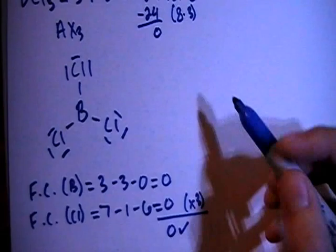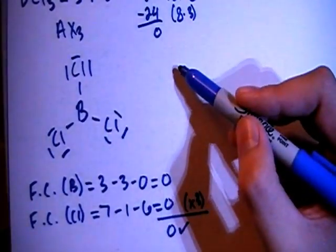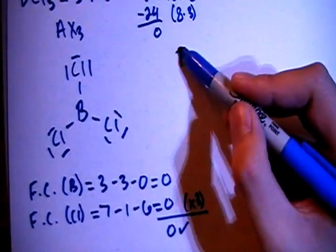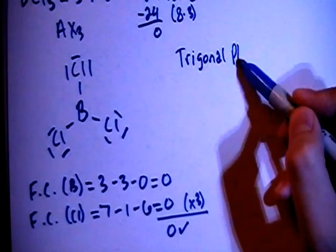Now we can talk about the shape. There's three surrounding atoms and no non-bonding electron pairs, so that means this is going to be a trigonal planar shape.